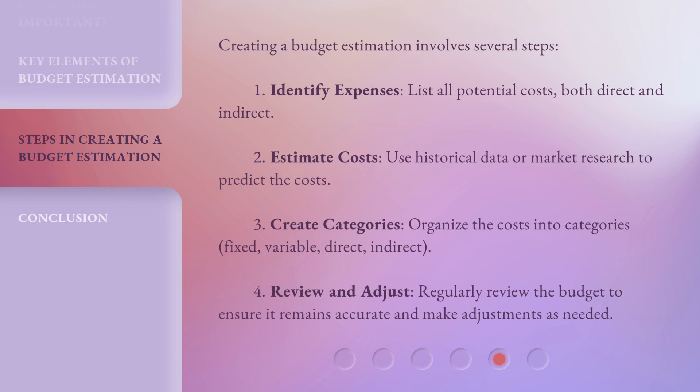Creating a budget estimation involves several steps. First, identify expenses by listing all potential costs, both direct and indirect. Second, estimate costs using historical data or market research to predict the figures. Third, create categories and organize the costs into groups: fixed, variable, direct, and indirect.